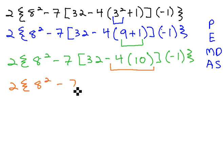We're going to multiply the negative 4 times the 10. 2 times 8 squared minus 7 times 32 minus 4 times 10 is 40, times negative 1, close the squiggly.